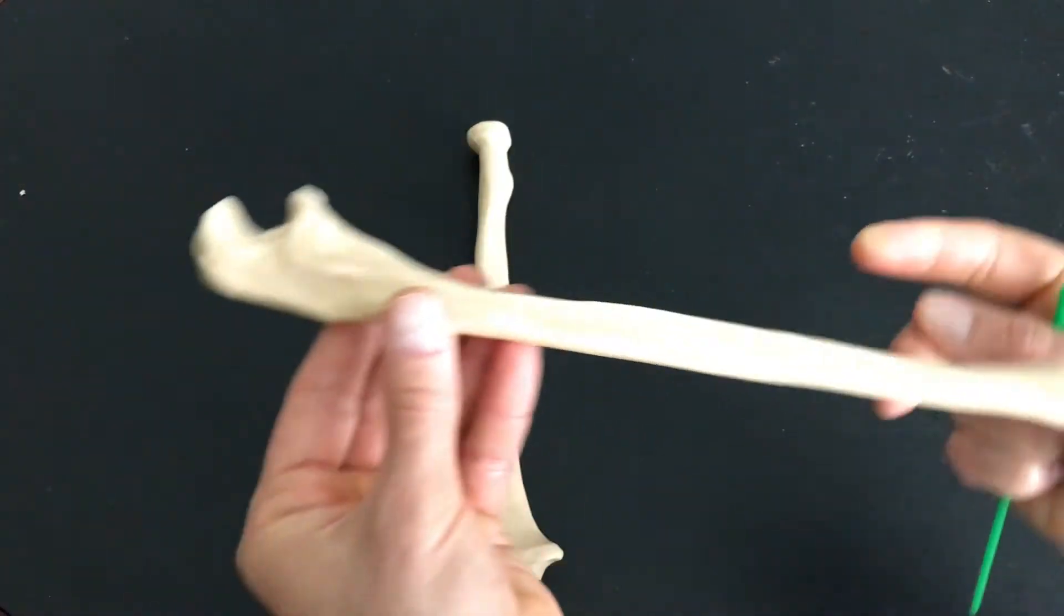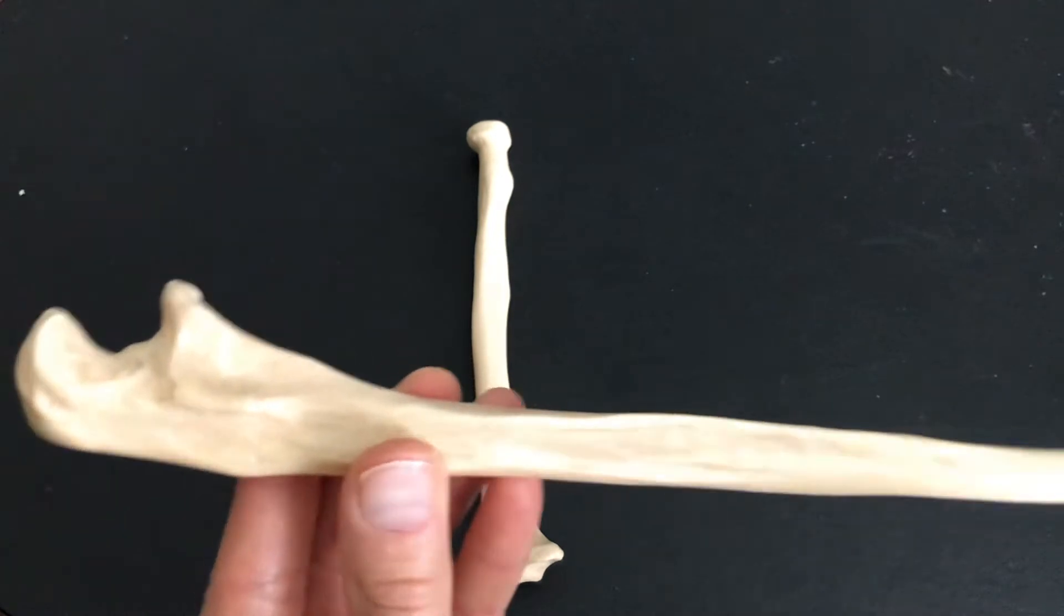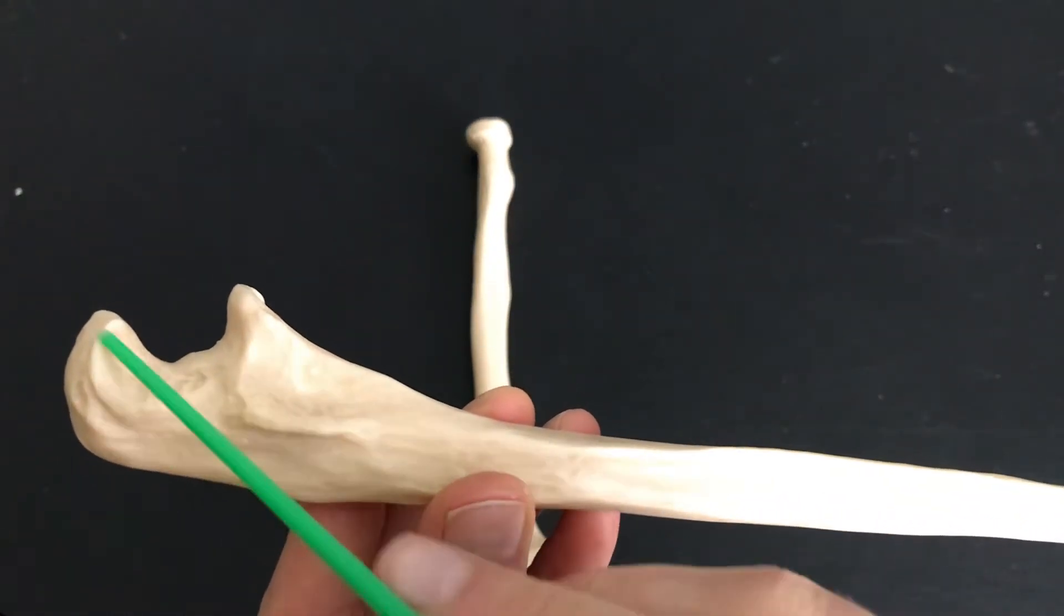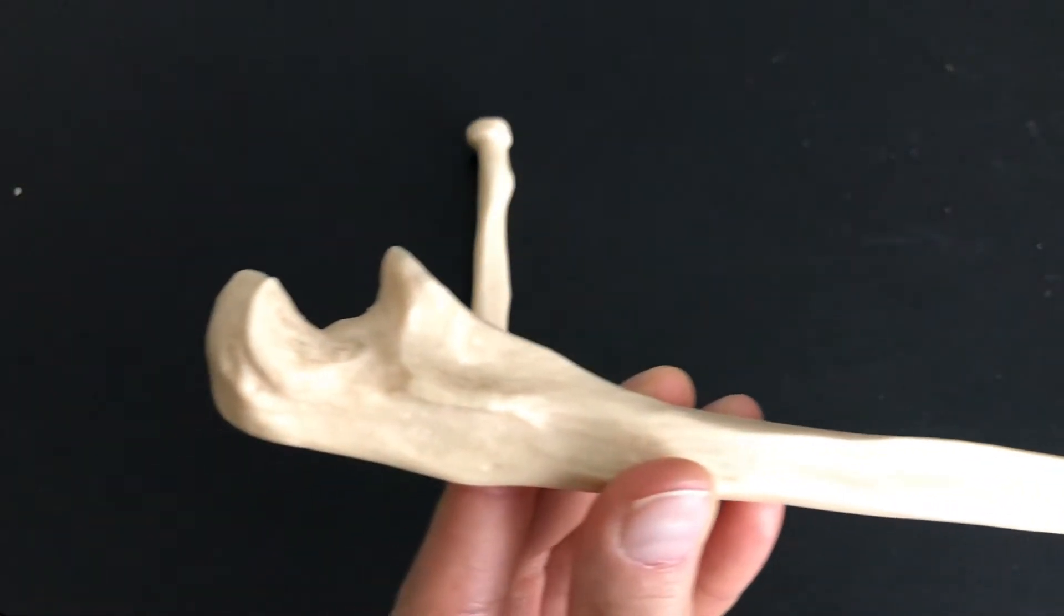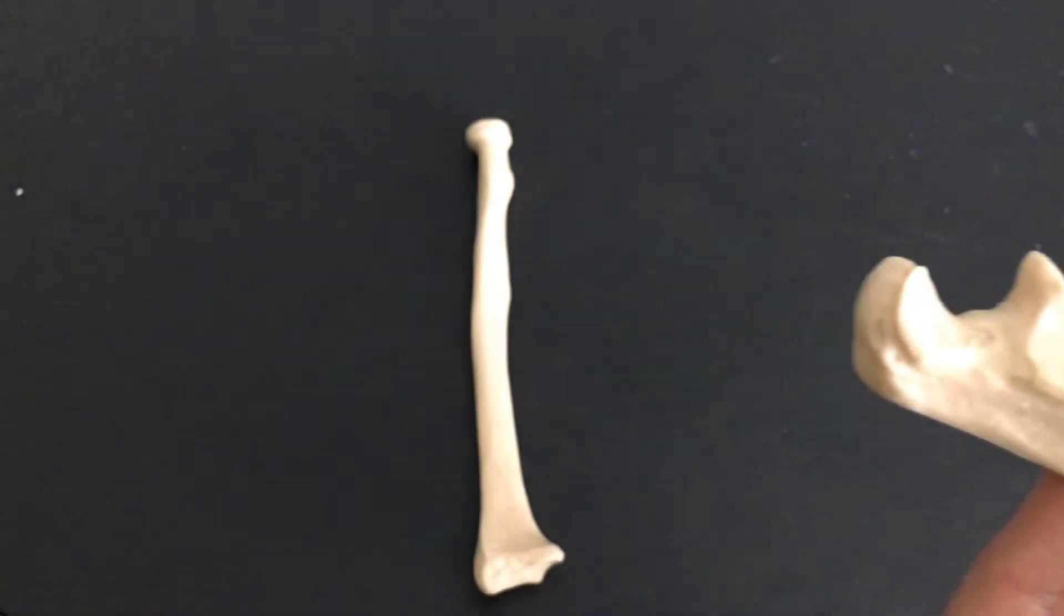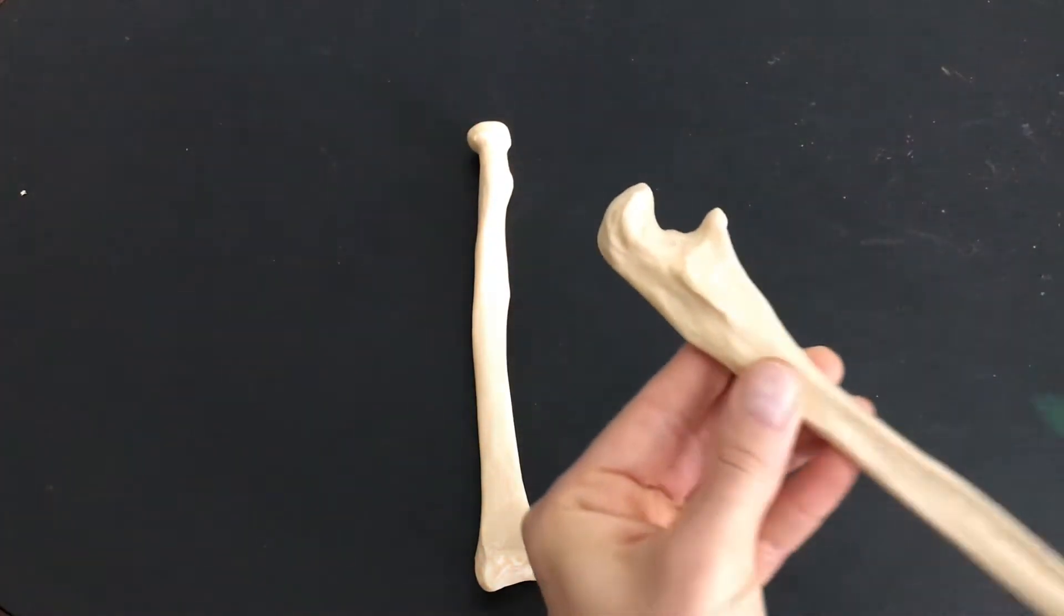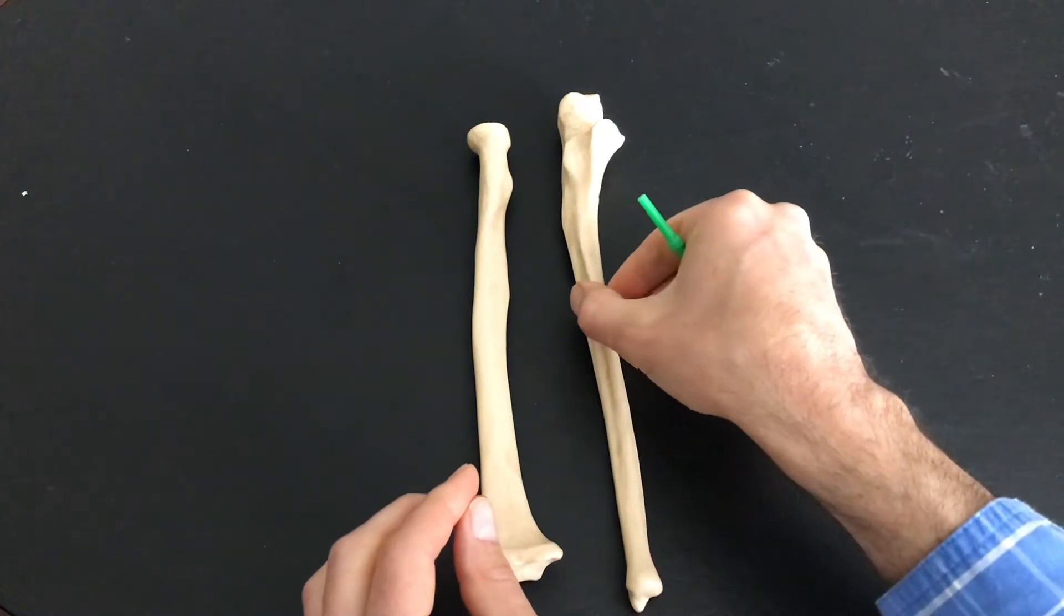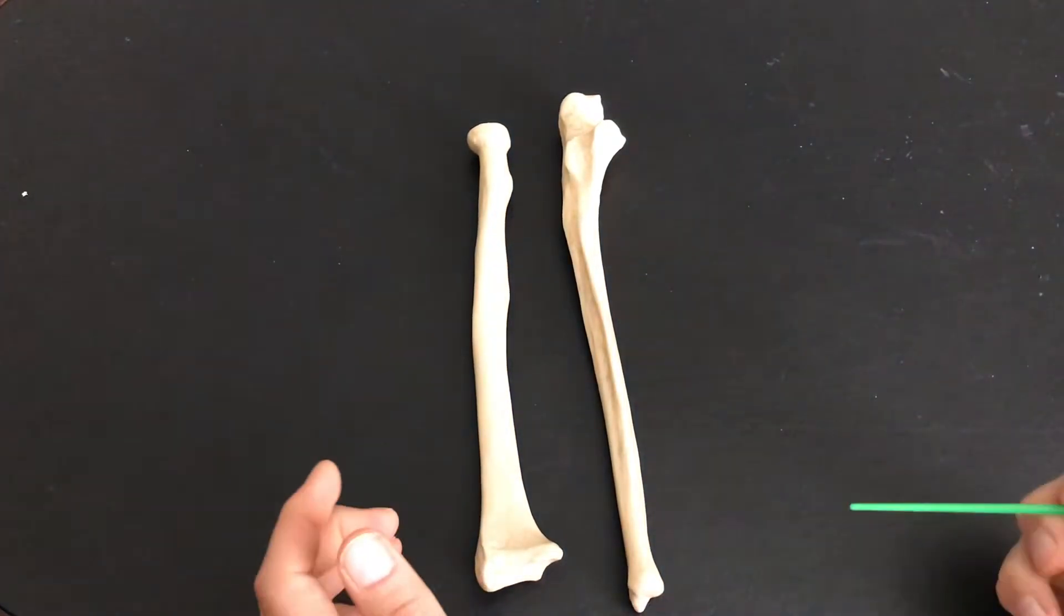The other bone, the ulna—see this nice U right there? How perfect that is, all the way across. You can remember the ulna has the U. So, radius and ulna.